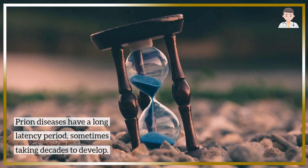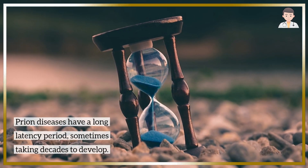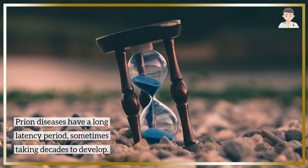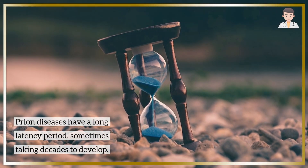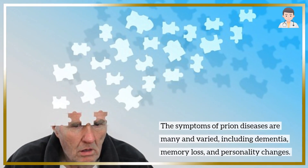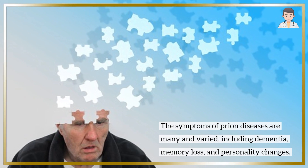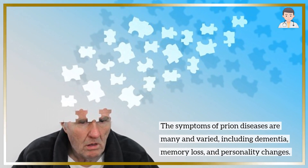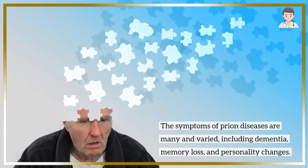Prion diseases have a long latency period, sometimes taking decades to develop. The symptoms of prion diseases are many and varied, including dementia, memory loss, and personality changes.